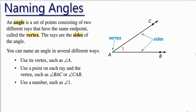Okay, so this is our notes for introduction to angles, and the first topic is naming angles. If we read this first paragraph here, we see that it says an angle is a set of points consisting of two different rays that have the same endpoint called a vertex, and the rays are the sides of the angle.